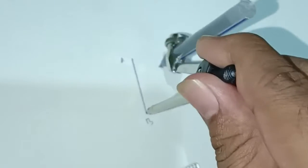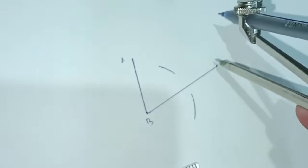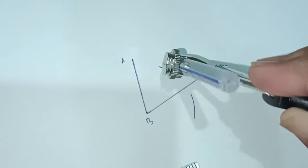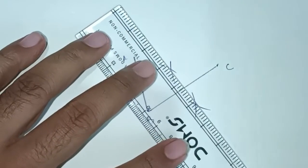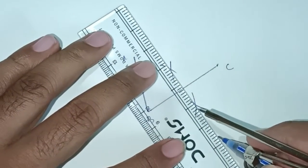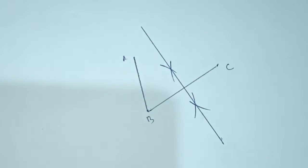Similarly, without changing the compass, put it on C and get the arc. Now connect these with the help of the ruler.